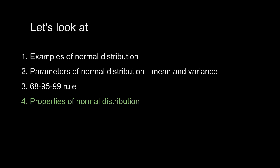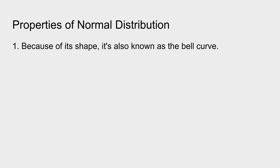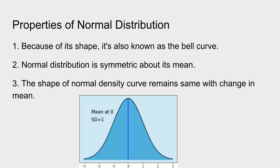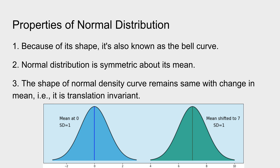Now that we understand the parameters and how area under the curve varies with increasing standard deviation, let's look at properties of normal distribution. First, this distribution looks like a bell curve. Second, it is symmetric about its mean. Third, the shape of the normal density curve remains the same with a change in mean — it is translation invariant. Moving the curve left or right on the number line, it looks exactly the same; only its location changes.